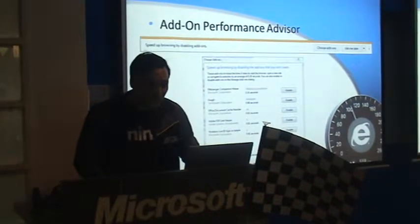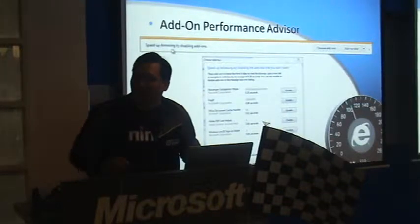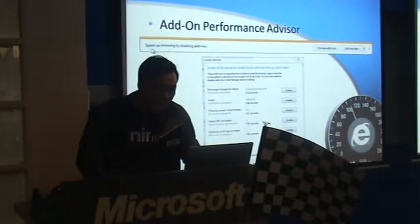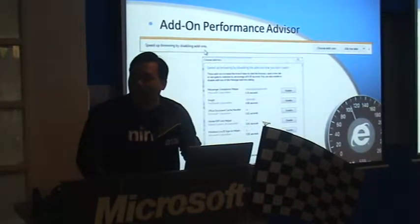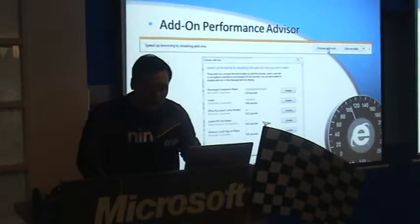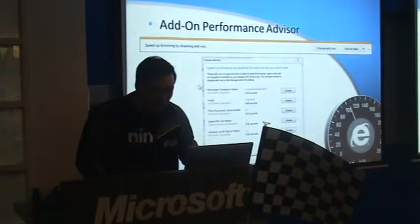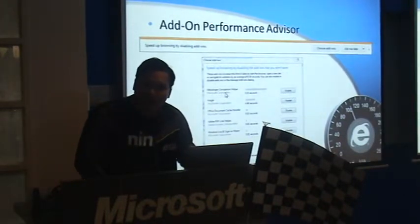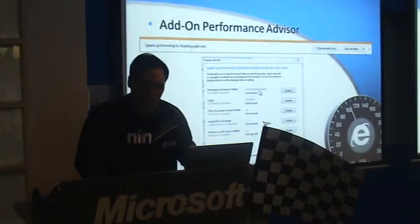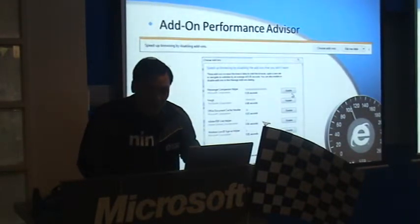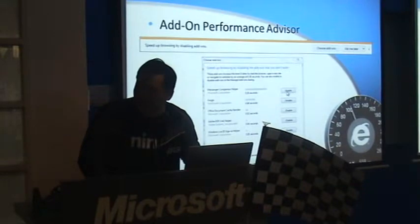And as you can see from here, I have a warning. Speed up browsing by disabling your add-ons. Once I click 'choose add-ons,' I get to see a screen like this. One of the slow add-ons that I have is Microsoft Messenger Compile companion, which takes a longer time to load. So I now have the option to actually disable this.